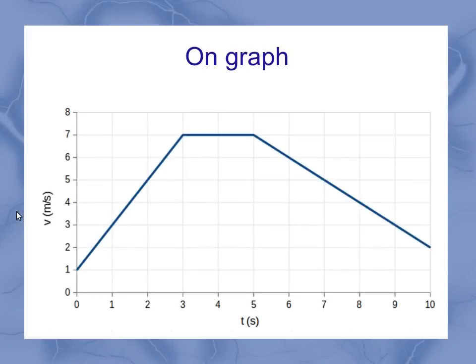If I think about what this average acceleration means on a graph, it's very similar to what we saw for average velocity where we had the position versus time graph. Now we have a velocity per time graph.